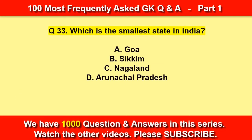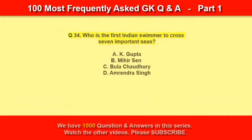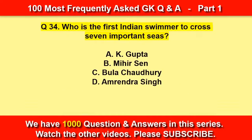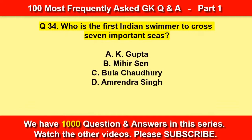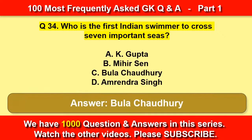Which is the smallest state in India? Goa. Who is the first Indian swimmer to cross seven important seas? Bula Choudhury.